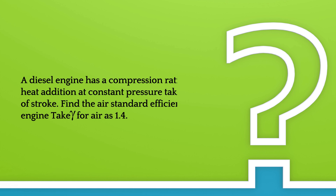Hello students. Today we will discuss some diesel cycle based numerical problems. A diesel engine has a compression ratio of 15, and heat addition at constant pressure takes place at 6% of the stroke. Find the air standard efficiency of the diesel cycle.